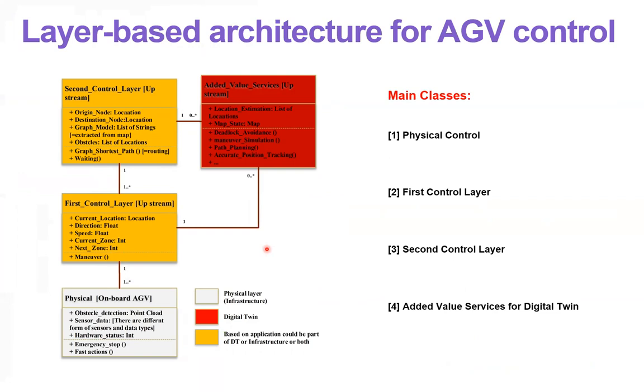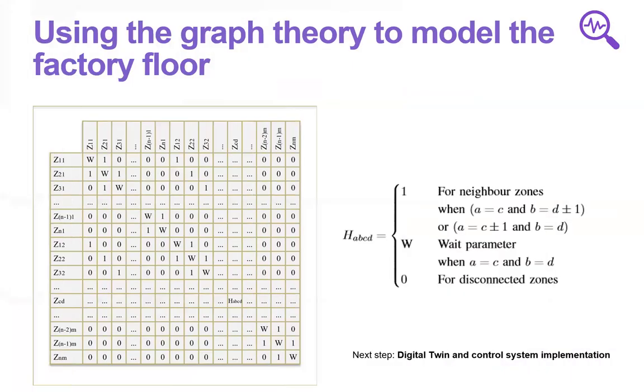This part is only for proof of concept and evaluation of the work. And that's not very innovative. Here, we can see the graph model of the factory floor. This is the adjacency matrix for the graph model of the factory floor.